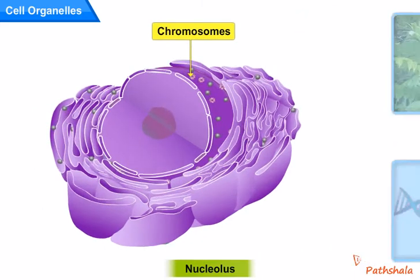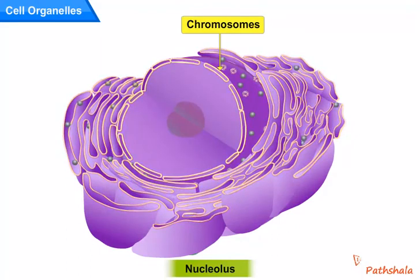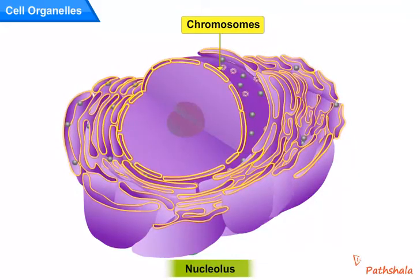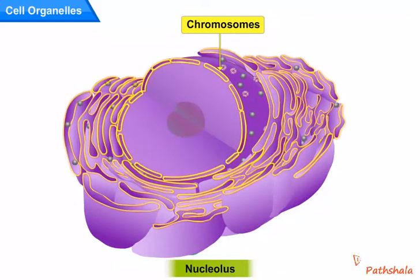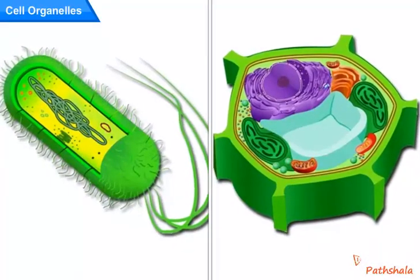We can see the chromosomes clearly during cell division. Nucleus, in addition to its role in inheritance, also controls all the activities of the cell. Hence, it is called as the brain of the cell or cell brain.